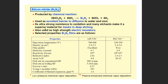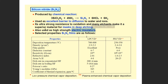Silicon nitride, called Si3N4, is used as an excellent barrier to diffusion. It is used as a mask for deep etching. Silicon nitride is also used as a high-strength electrical insulator.